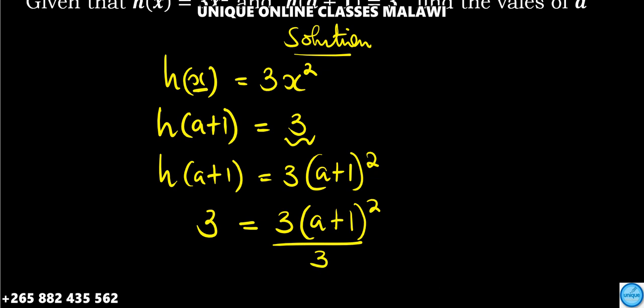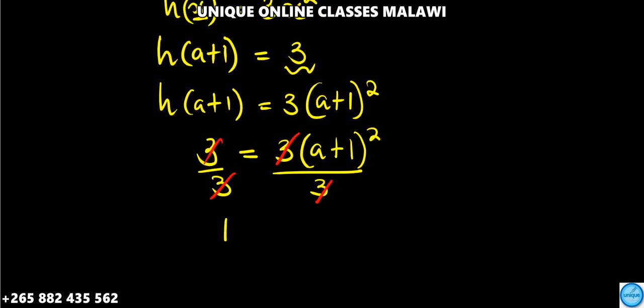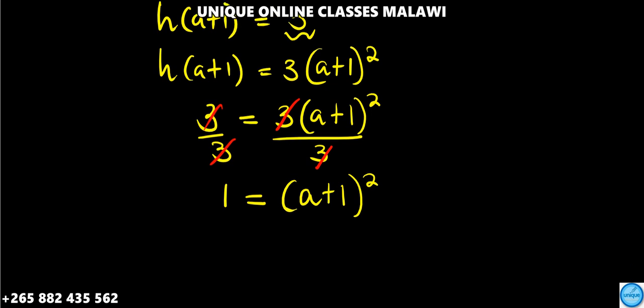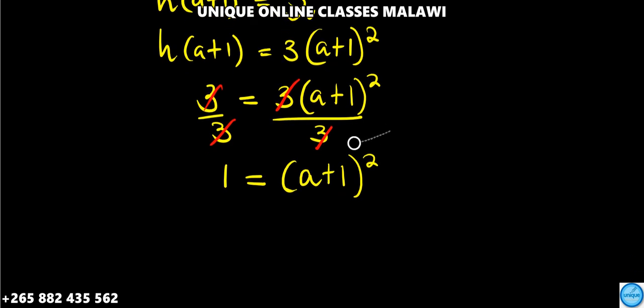We can divide both sides by 3. This 3 and that 3 cancel. We would be left with 1 is equal to open bracket a plus 1 then squared.